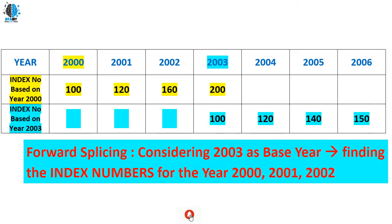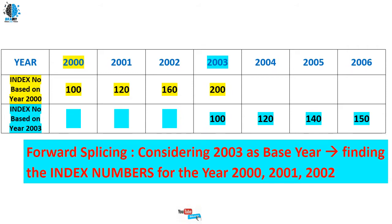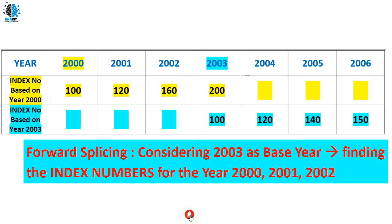Finding the index numbers for the years 2000, 2001, and 2002 by keeping the recent year 2003 as the base year — this is called forward splicing. It is called forward splicing because we are using the more recent year 2003 as our base year while constructing index numbers for the earlier years.